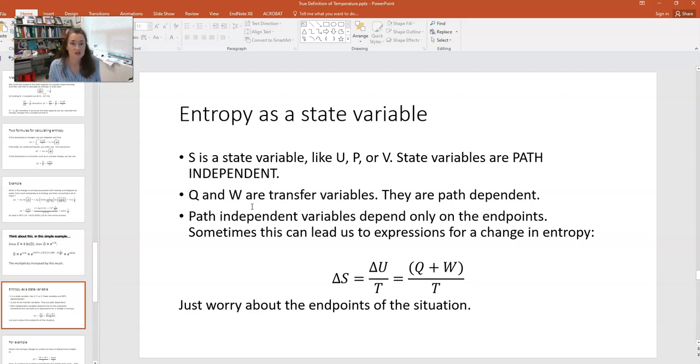So for example, if we use that definition of temperature and rearrange it, we have delta s equals delta u over T. And remember that via the first law of thermodynamics, delta u equals q plus w. So we could say that delta s then is q plus w over T. And we just worry about the endpoints of the situation. So maybe there's other things that we can do using this expression and calculate an entropy change for. Here's one example.